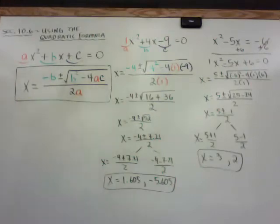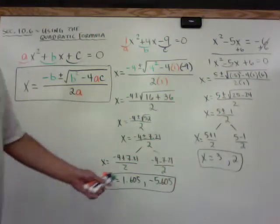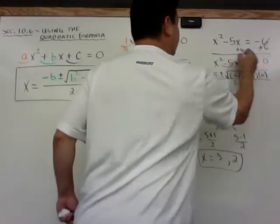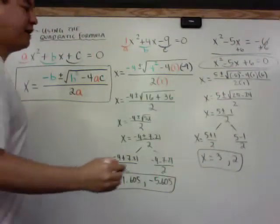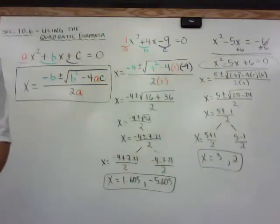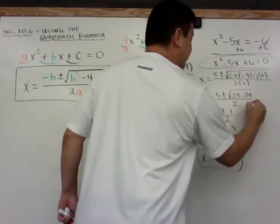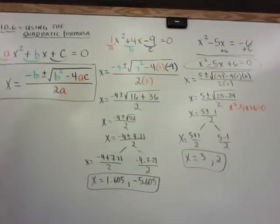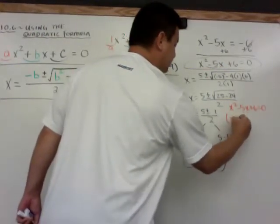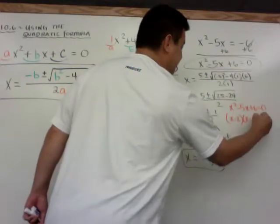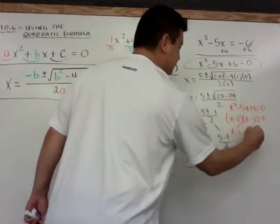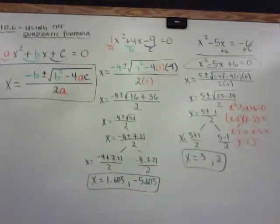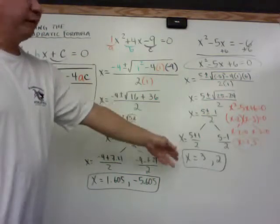If you ever get whole numbers like that, it's OK. What that just means is that you could have actually factored this trinomial here. So if I have x squared minus 5x plus 6 equals 0, and I'll do it in a different color pen so you can see it. I could have just went x minus 2 times x minus 3 equals 0. Set this equal to 0, set this equal to 0, and x is equal to 2 or 3. So you can see it's much easier if you can factor it. But you can always use the quadratic formula and get there the same way.